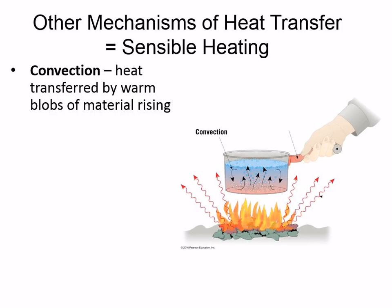Convection happens in the interior of the Earth, and it happens with a lava lamp. Lava lamps have a heating element that warms the fluid; as it warms, it expands and gets buoyant — it gets less dense and rises.